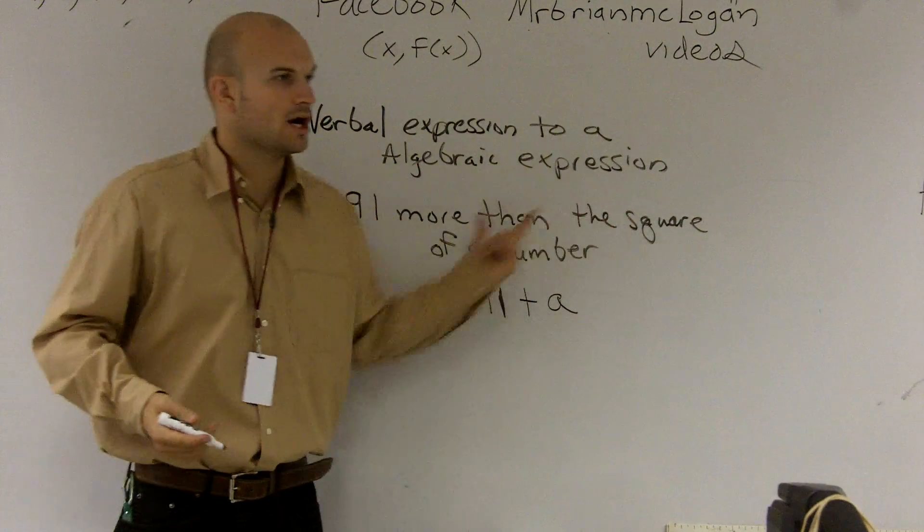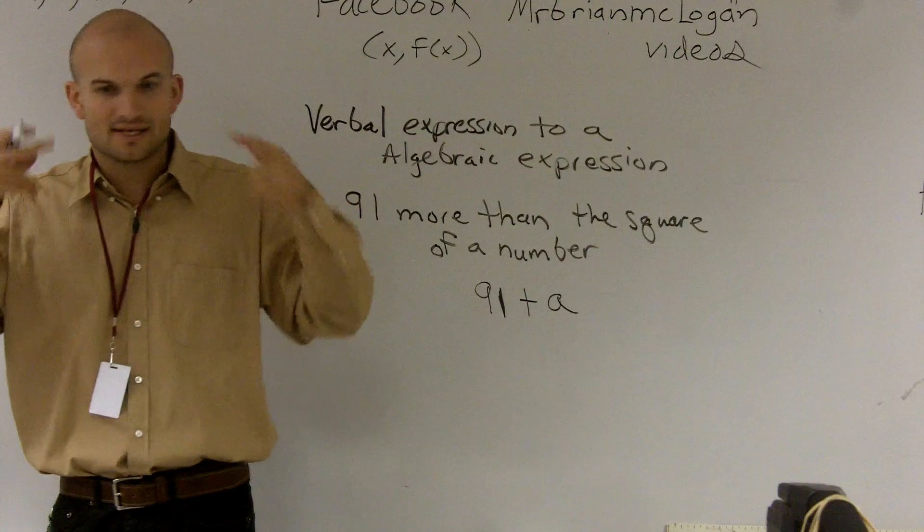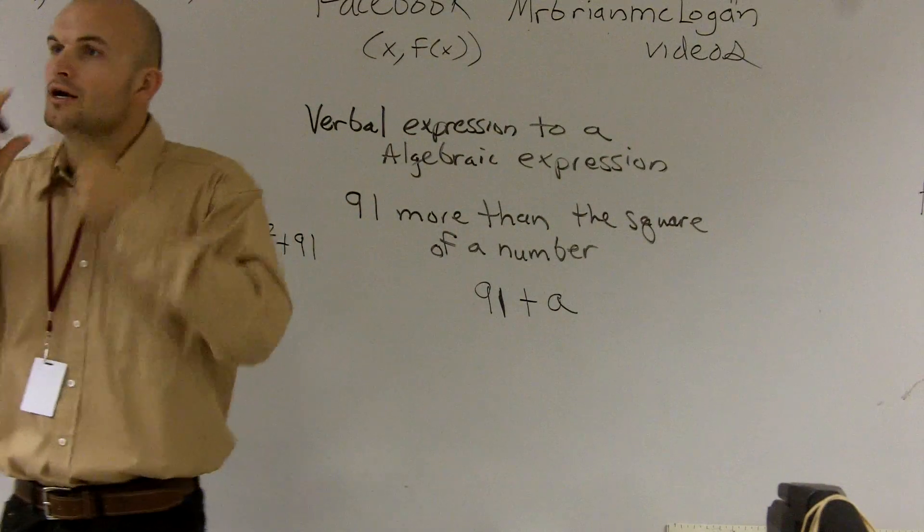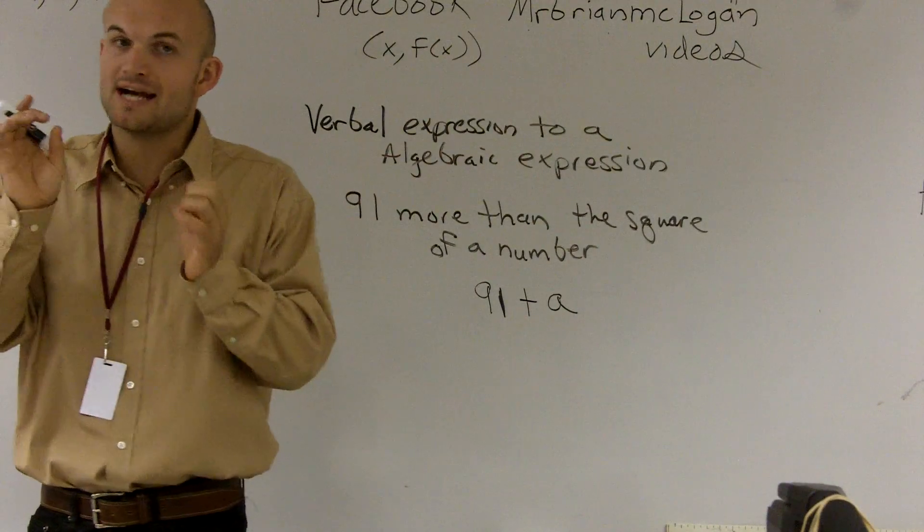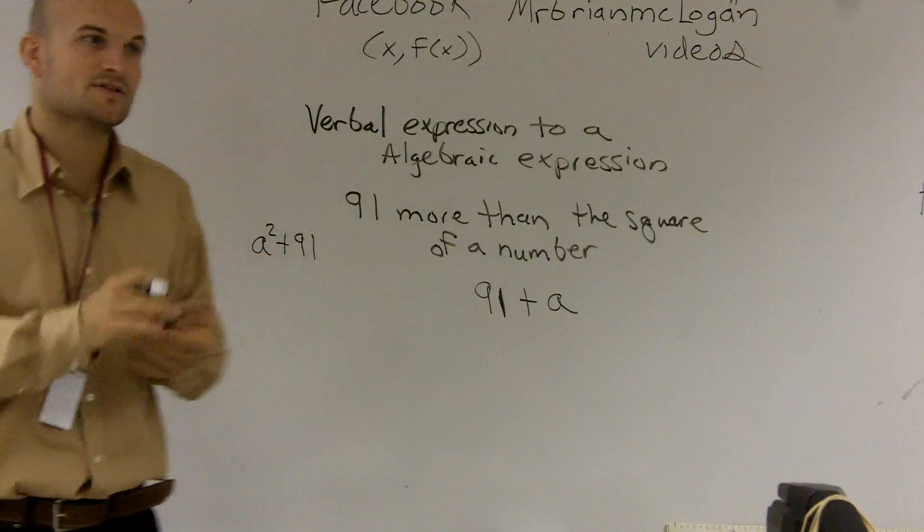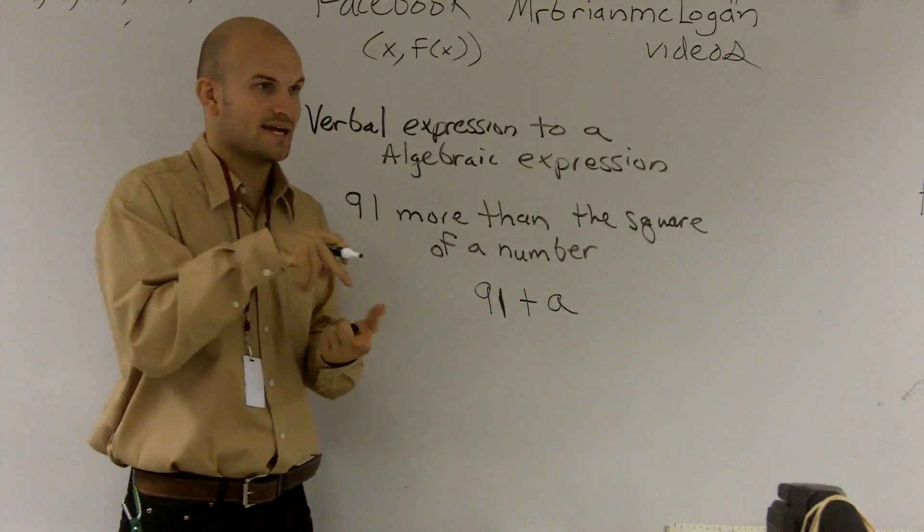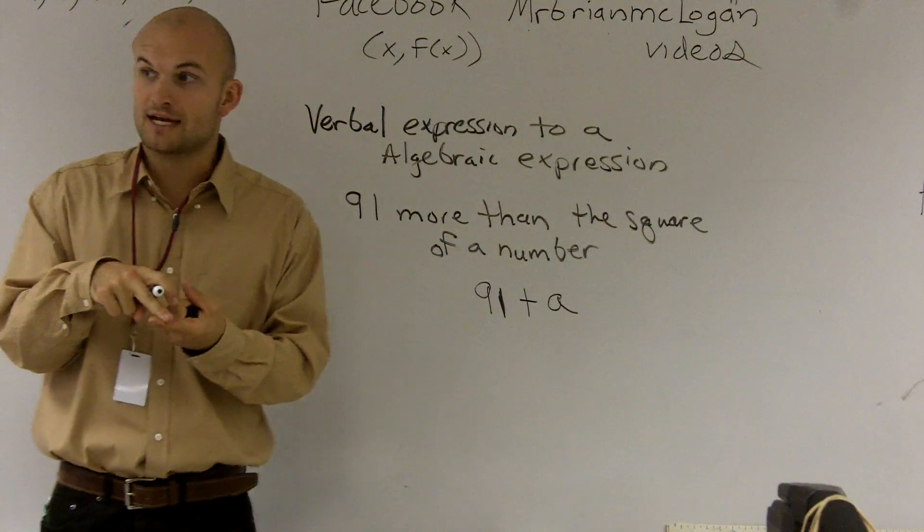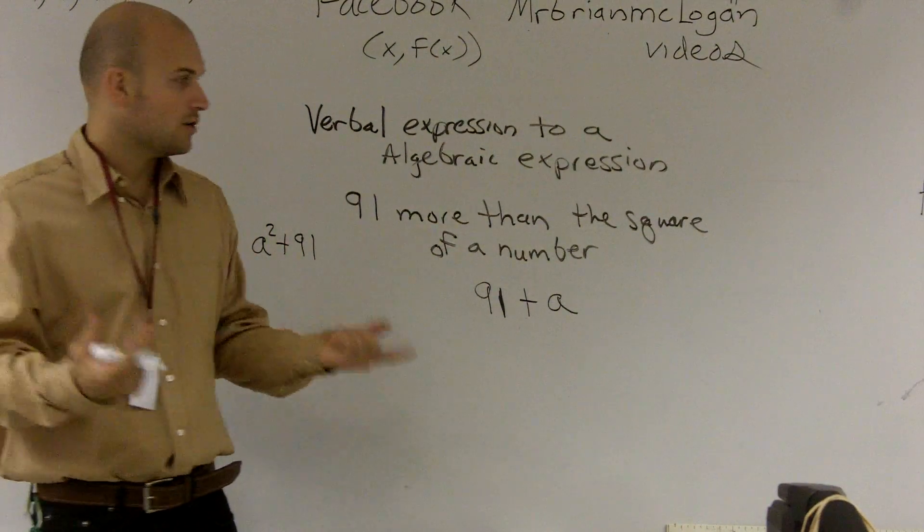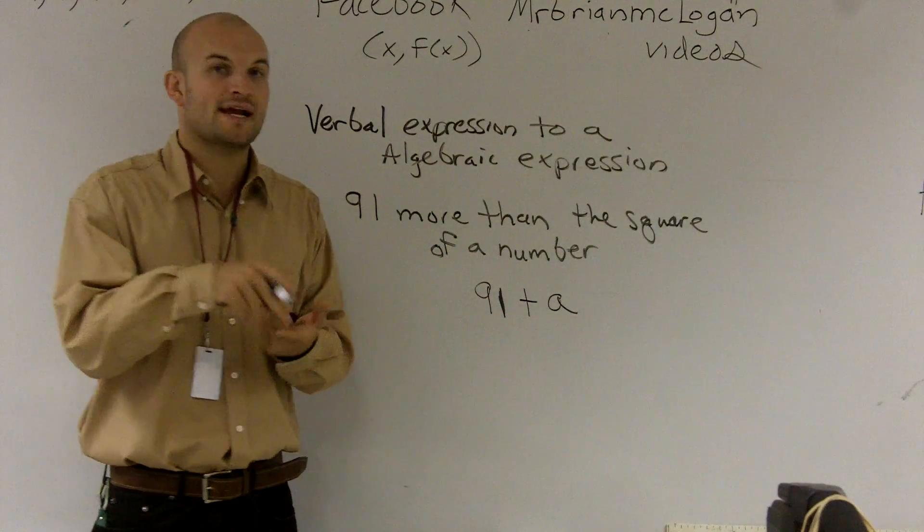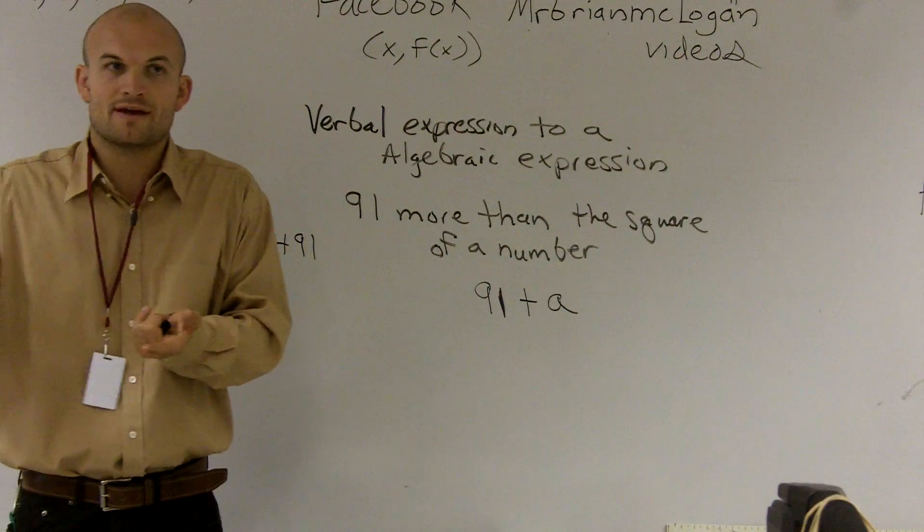But it says the square of the number. So now we've got to think, all right, what was square mean again? Well, we talked about the power. Remember, power has a base and the exponent. Well, that exponent was your power. So a couple things we said for powers was, you could say it was squared if it was raised to the second power. It was cubed if it was raised to the cubed power. Or whatever number it was, we just say raised to blank, whatever that number was, power.